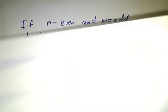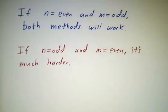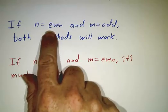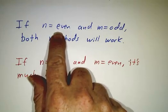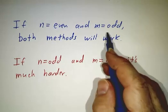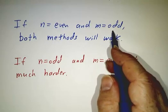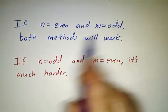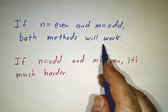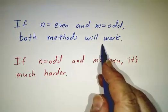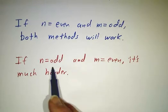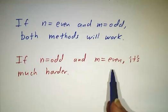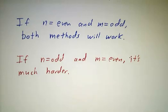To summarize: if n is even, use u equals tangent of x; if m is odd (and n is odd), use u equals secant of x. If n is even and m is odd, you get a choice — both methods will work. If n is odd and m is even, neither method will work directly; there are more sophisticated methods for that case, but that's not the subject of this video.